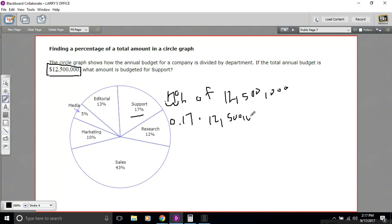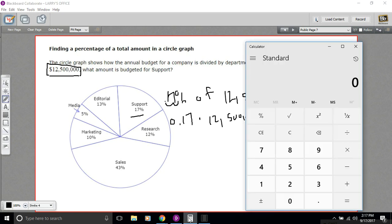And you can just pull out your calculator for that. Let me do that right now. So 0.17, that's my 17%, times 12,500,000. So that is 2,125,000.